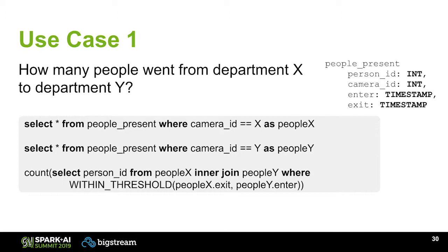Use case one: how many people went from one department to another. Once you have the infrastructure set up and can reliably identify people both within one camera and across cameras, it's rather easy to aggregate a table listing a unique ID for a person, a camera ID, and when they entered and exited the view. If we want to know if they were seen in two departments, we can run some queries with selects and a UDF within a threshold — based on how long a direct route would take from one camera to another. Once you have this kind of system running reliably, it can start to answer these types of questions.